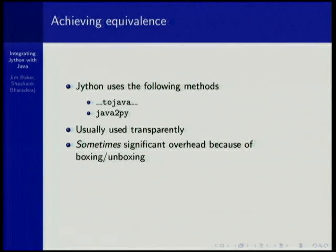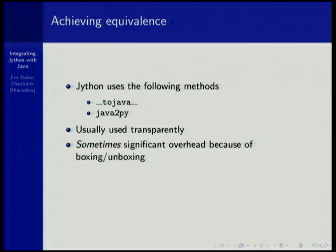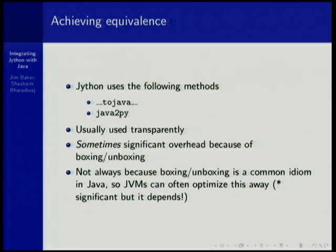These are usually used transparently, but sometimes there's significant overhead because of boxing and unboxing — that's one thing to consider in your code. There are alternatives and some implications for how boxing and unboxing works. However, even though boxing and unboxing occurs in actual function calls, it doesn't necessarily happen due to inlining by the JVM. Most JVMs inline very well, and we'll see even better inlining in the future with invoke dynamic support that Shashank has worked on. As a common idiom, the JVM does a very good job optimizing boxing away.